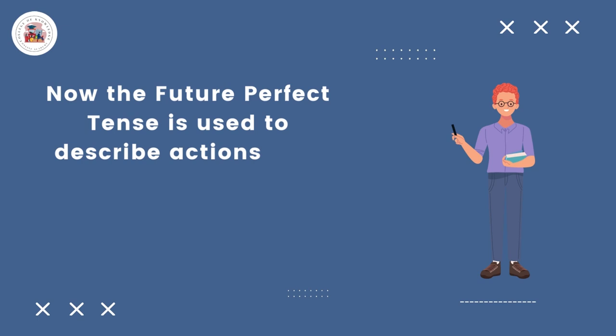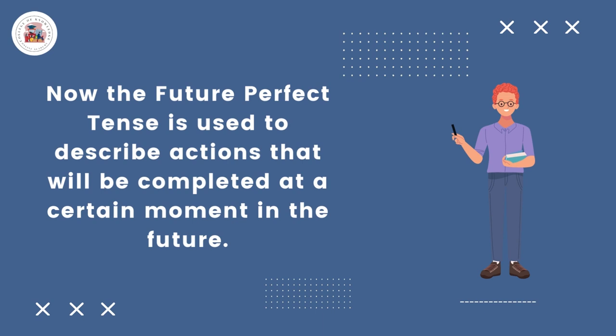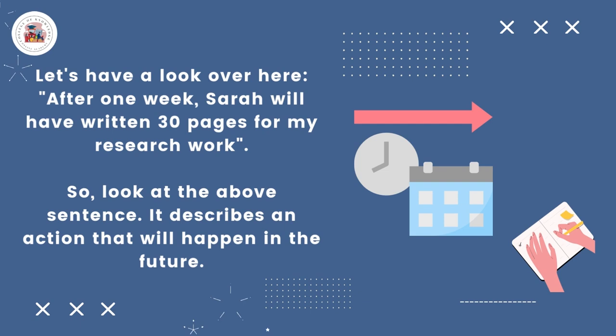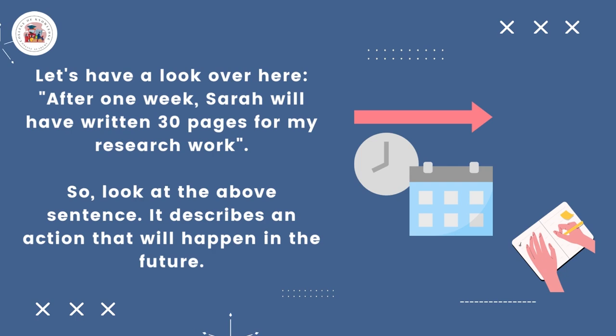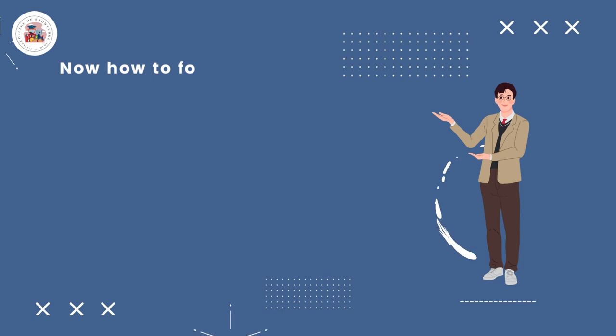The future perfect tense is used to describe actions that will be completed at a certain moment in the future. Let's have a look over here. After one week, Sarah will have written 30 pages for my research work. Look at the above sentence — it describes an action that will happen in the future.